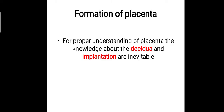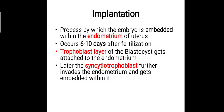For proper understanding of placental formation, knowledge about the decidua and the implantation process are inevitable. Implantation is the process by which the embryo is embedded within the endometrium of the uterus. It occurs 6 to 10 days after fertilization. The trophoblast layer of the blastocyst gets attached to the endometrial layer of the uterus, and later the syncytiotrophoblast further invades the endometrium and gets embedded within it.